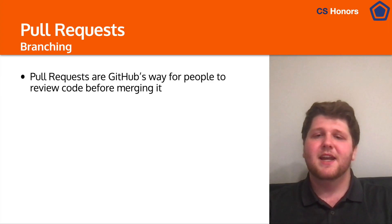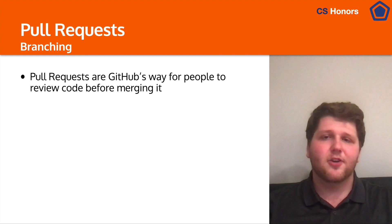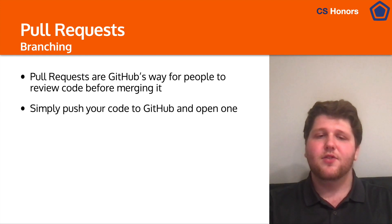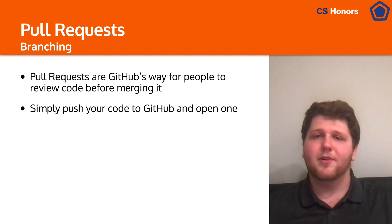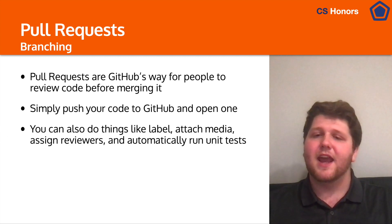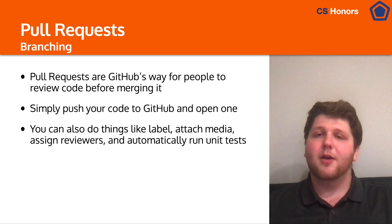So let's talk about pull requests. Pull requests are GitHub's way of allowing people to review your code before it gets merged into a branch. This is really useful for larger companies because you're able to have people look at your code and make sure there are no bugs before it actually gets added to a product. You simply push your code to GitHub on a new branch, then go to the pull request tab and click open. You can also add labels, attach media, assign reviewers, and even automatically run unit tests to check what your code is doing.